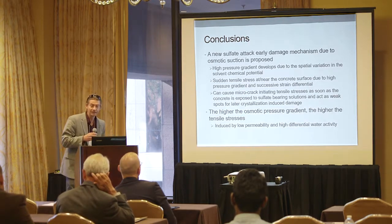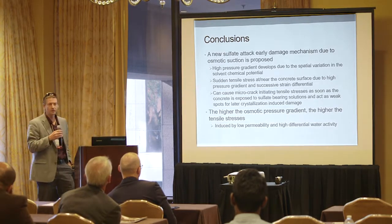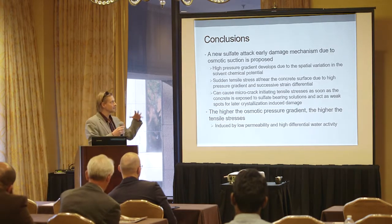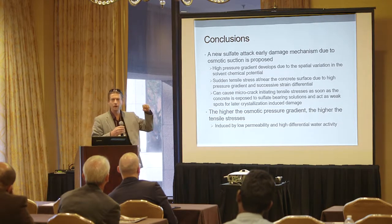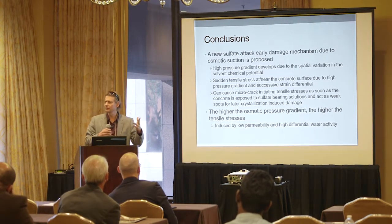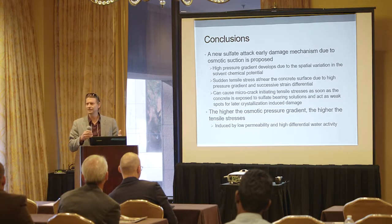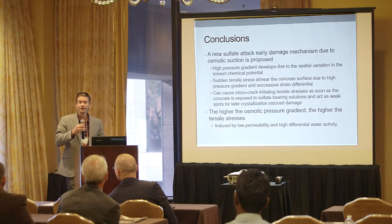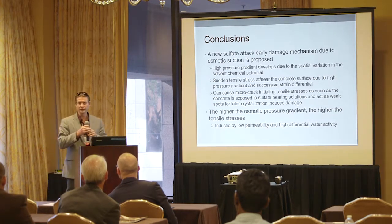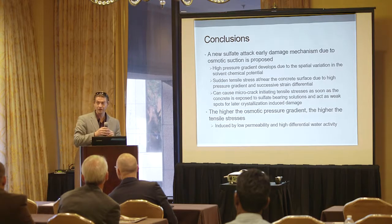So a new sulfate attack early damage mechanism due to osmotic suction is proposed. You get a very high pressure gradient that develops near the surface of your concrete because you are adding this chemical to the surface that creates a gradient in the water activity — a chemical potential gradient that sucks water out of it. Same as adding calcium chloride to dirt roads: calcium chloride dramatically reduces the activity of water, so it starts sucking water out of the air to keep the road damp. Exact same mechanism as what's going on here on the surface of concrete.